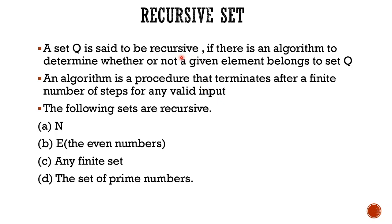If we find such an algorithm, we have a recursive set. N — the set of natural numbers — E — the set of even numbers — any finite set, and the set of prime numbers: these are recursive sets. Such sets are called recursive sets. Hope the concept is clear.